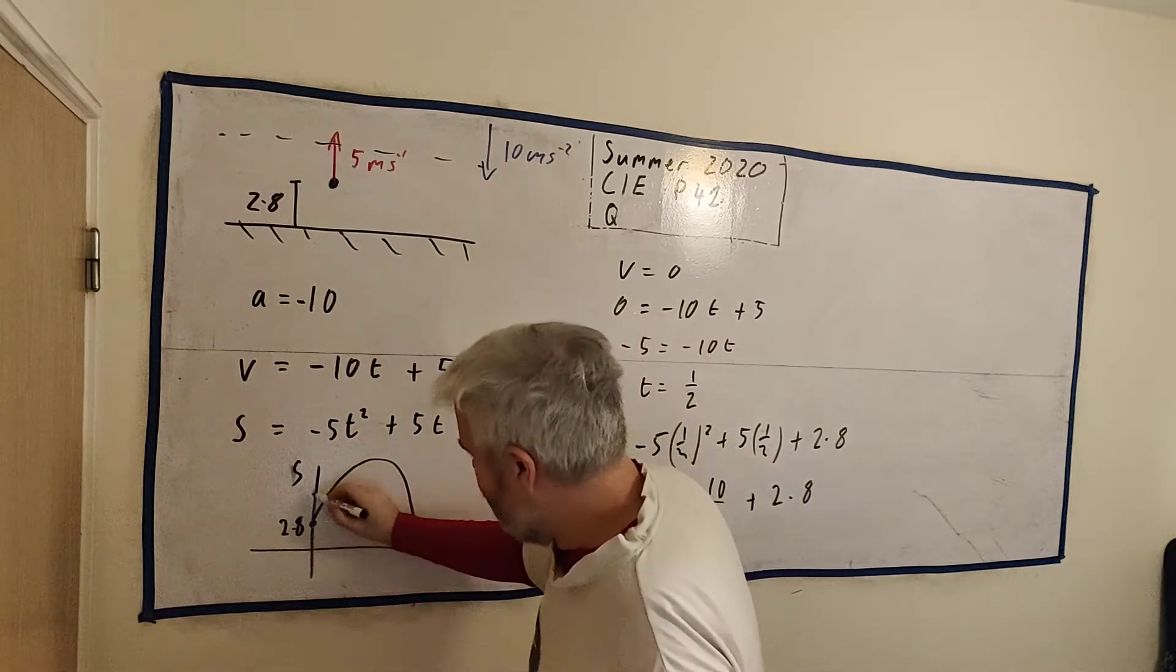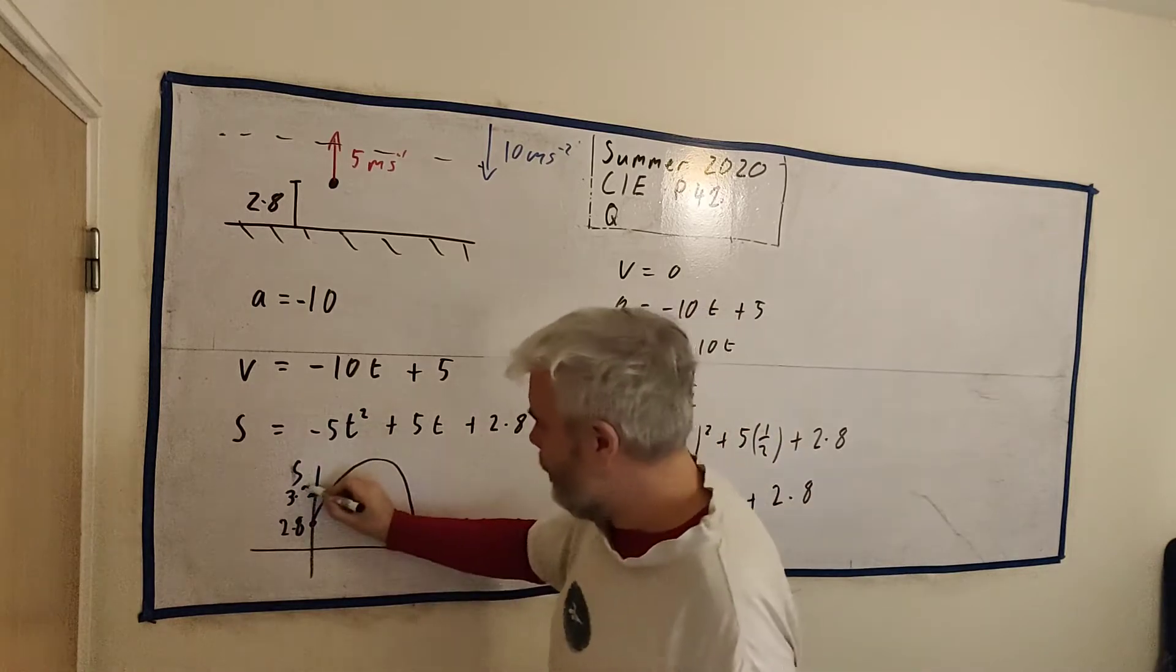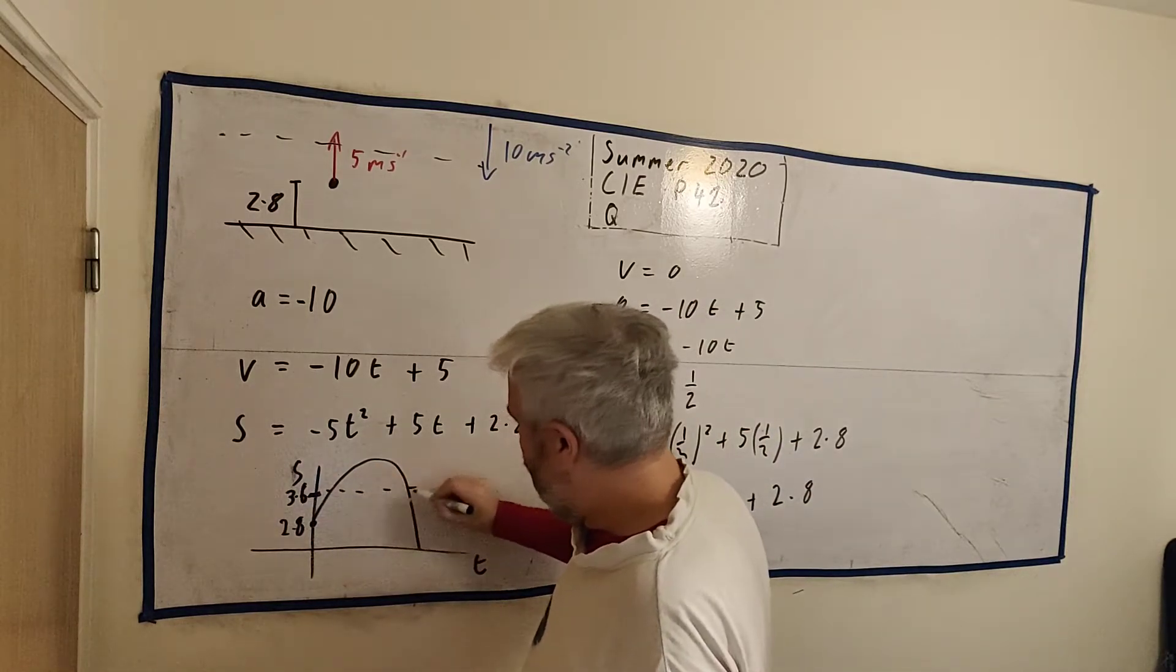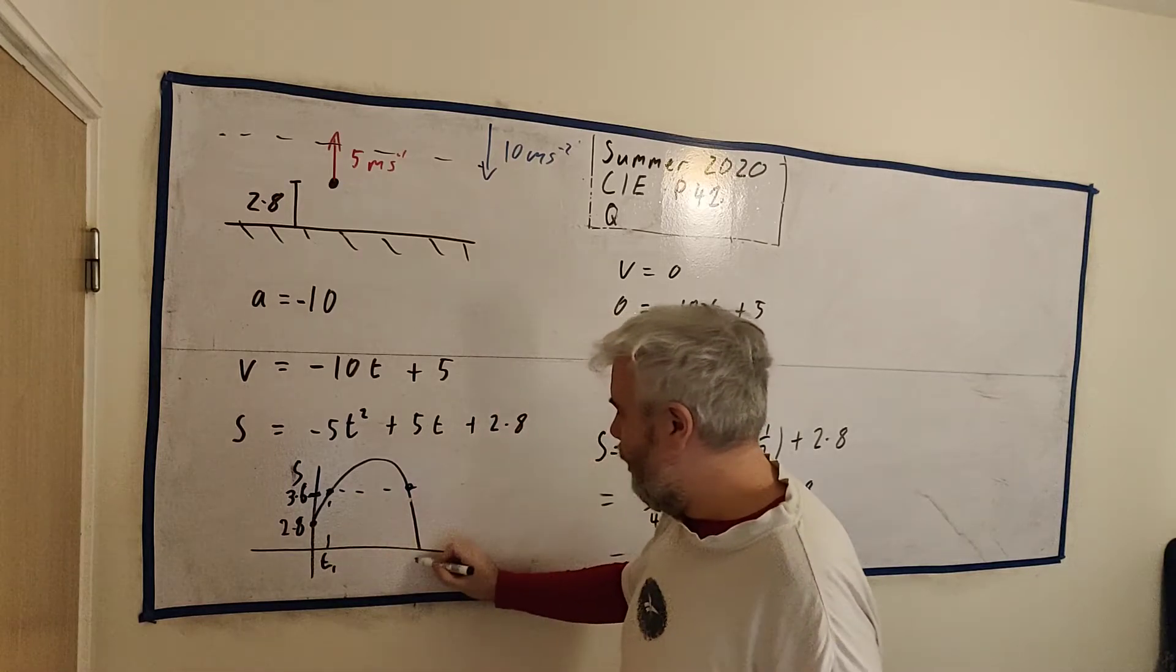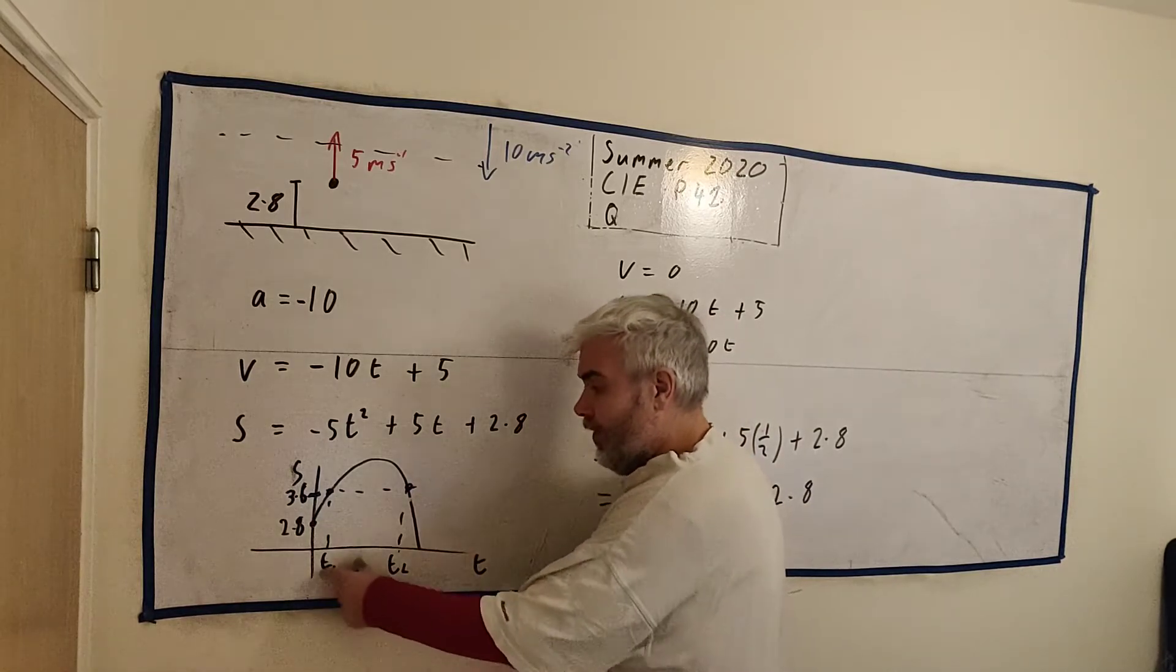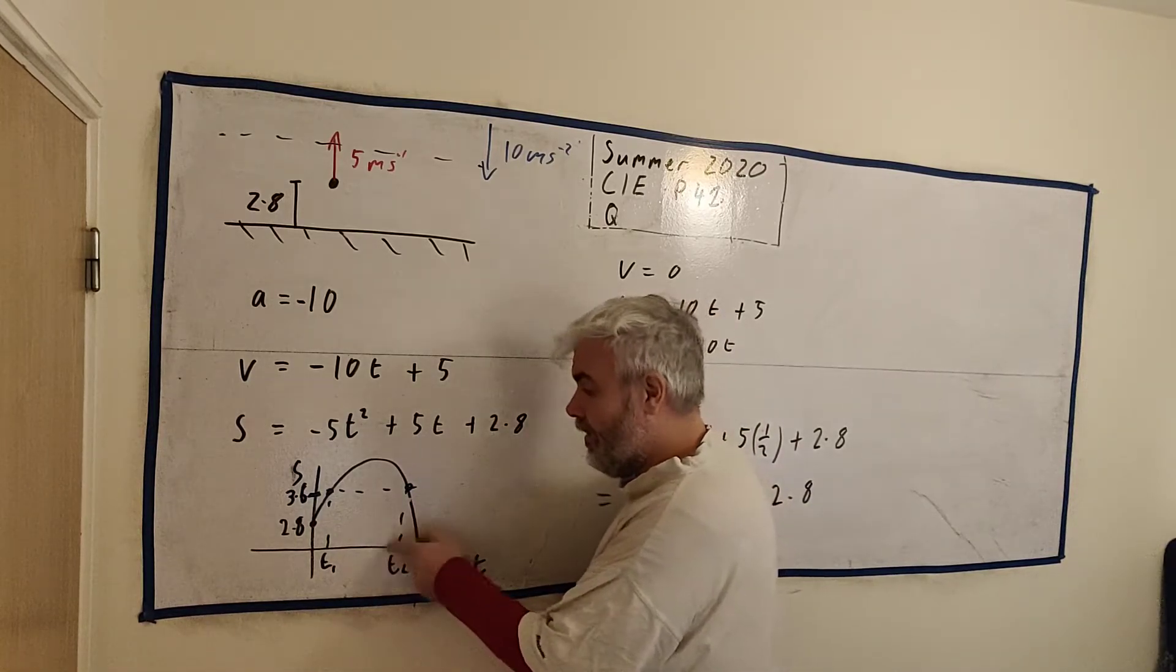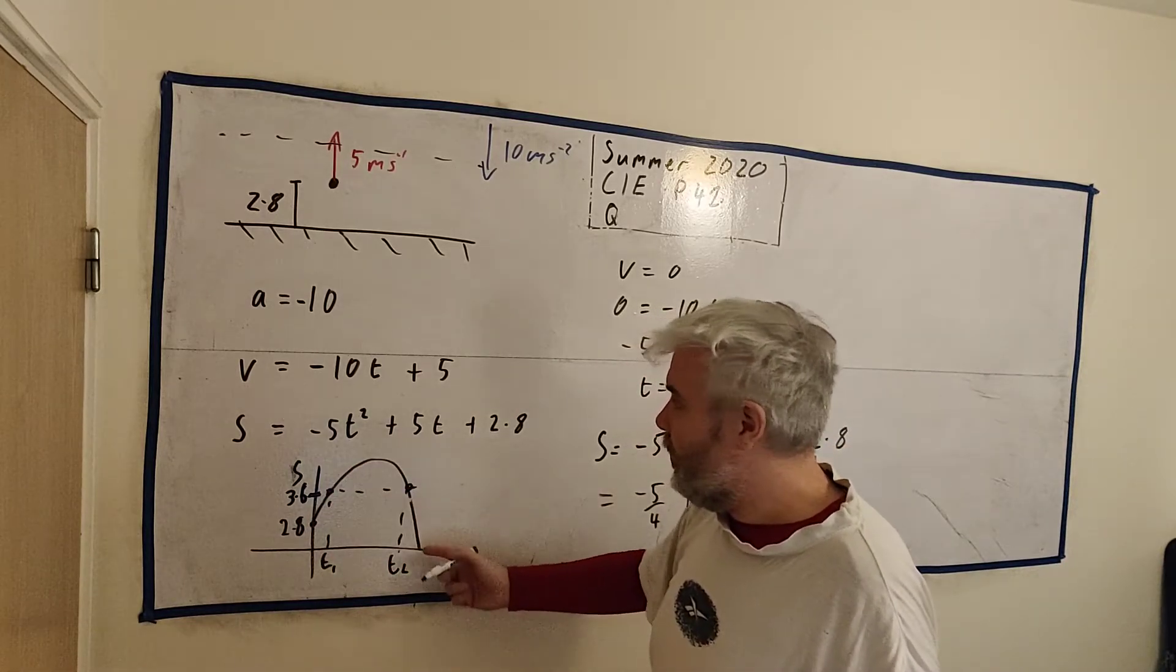So there is a number, 3.6. We really just need to find what time these two points are. What is this time and what is this time. So it'll be easy then to find how long it's up in the air. Take this time minus this time.